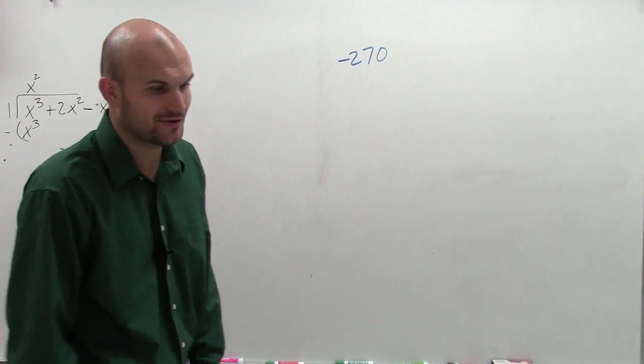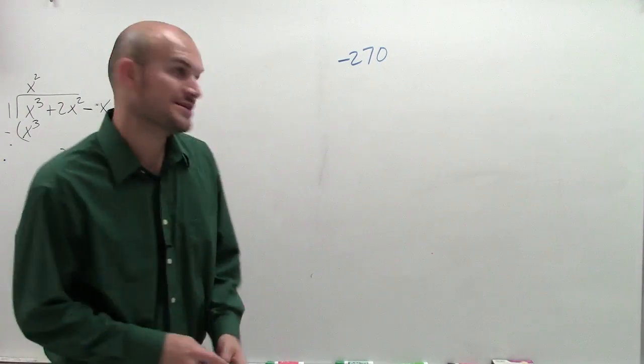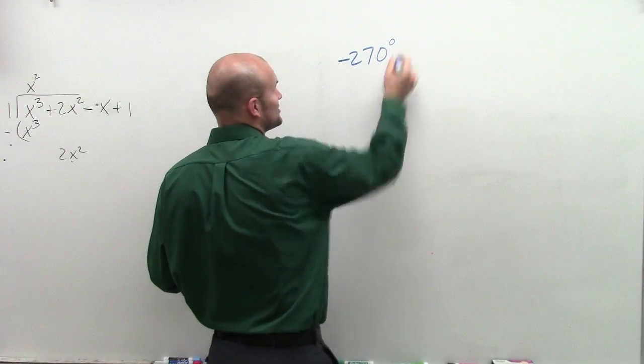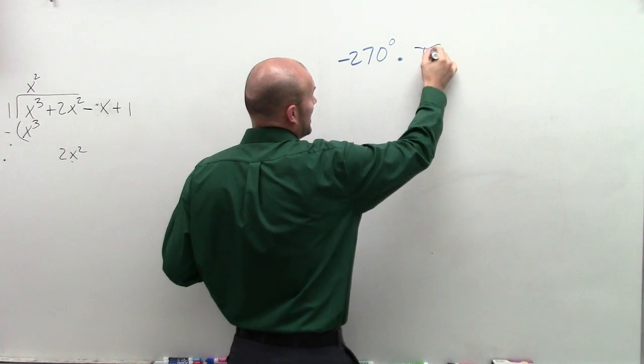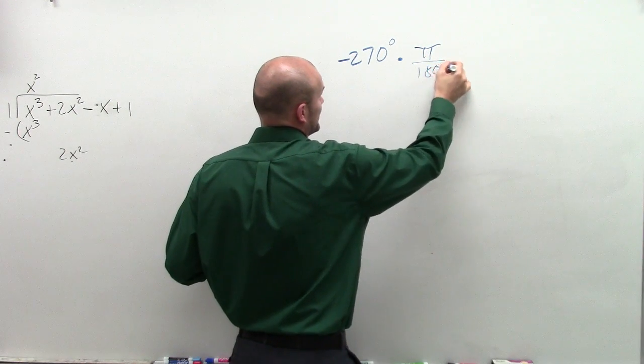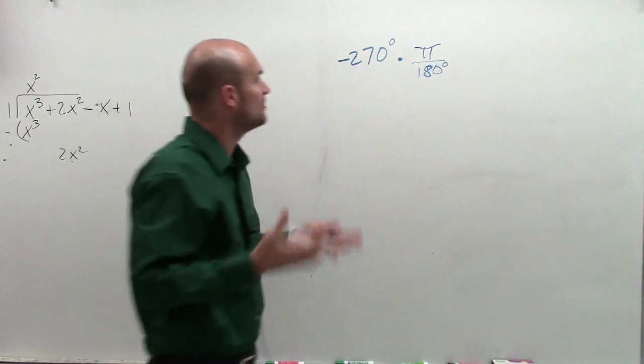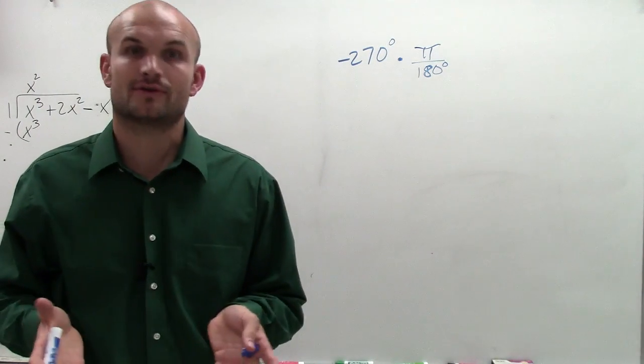So to do that, what I'm going to have to do is multiply by our ratio. The ratio I'm going to multiply, this is negative 270 degrees, I'm going to multiply it by π over 180 degrees. Now, the reason why I'm going to multiply it by π over 180 degrees is,